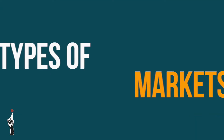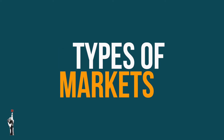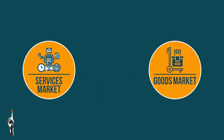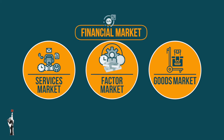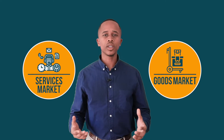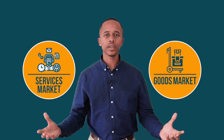One gets a variety of types of markets: the goods market, the services market, and also the factor market, which includes the financial market and the labor market. In this first lesson, we'll only be looking at the goods market and the services market.